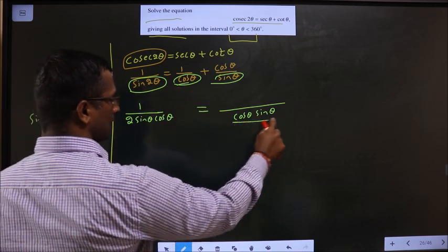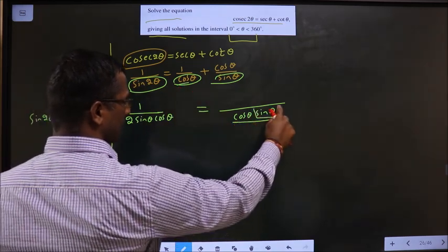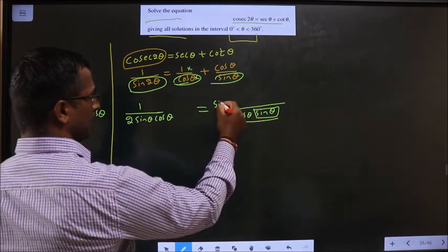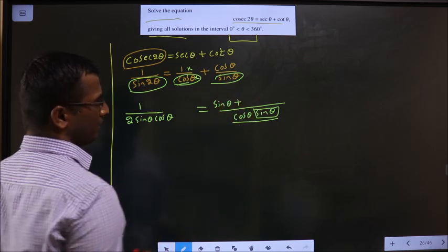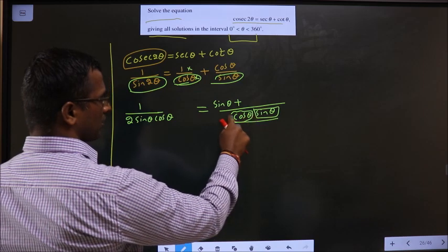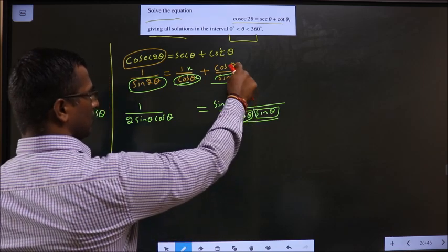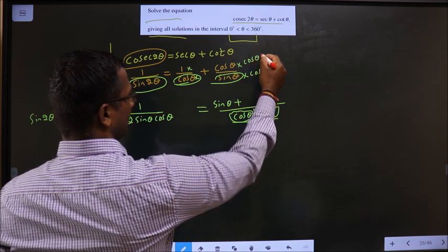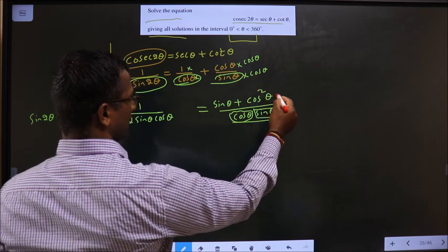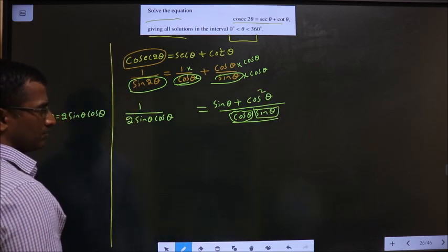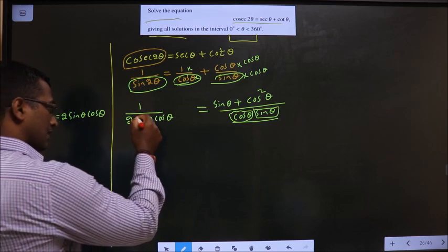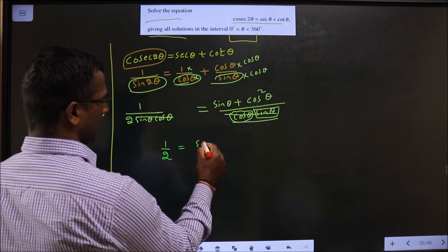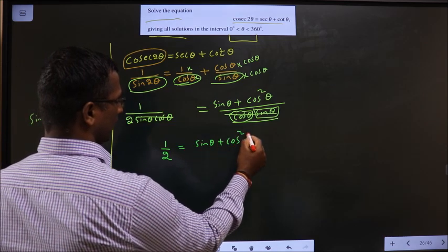Here it is cos θ, so multiply denominator and numerator with sin θ. This will become sin θ plus here missing is cos θ, so multiply denominator and numerator with cos θ. Cos θ into cos θ will be cos square θ. Now cancel out sin θ cos θ in both sides. 1 by 2 equal to sin θ plus cos square θ.